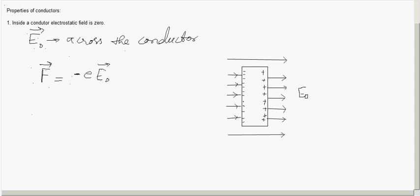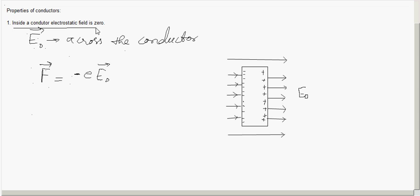An electric field sets up inside the conductor in a direction opposite to E₀, and it builds up until it becomes equal and opposite to E₀. Since the external field and the field developed due to charge carrier movement are equal and opposite, the resultant electric field inside the conductor becomes zero.